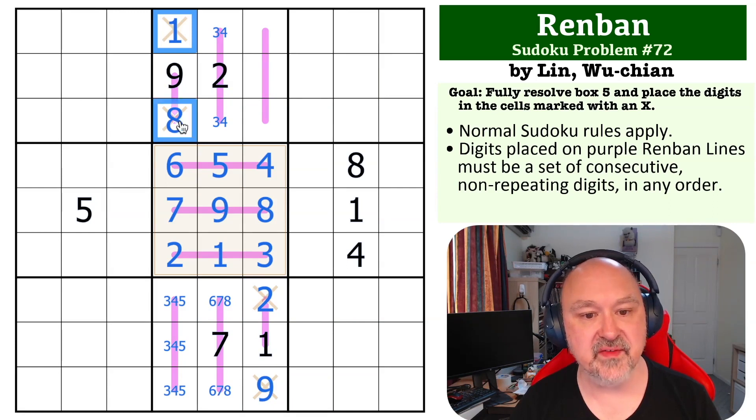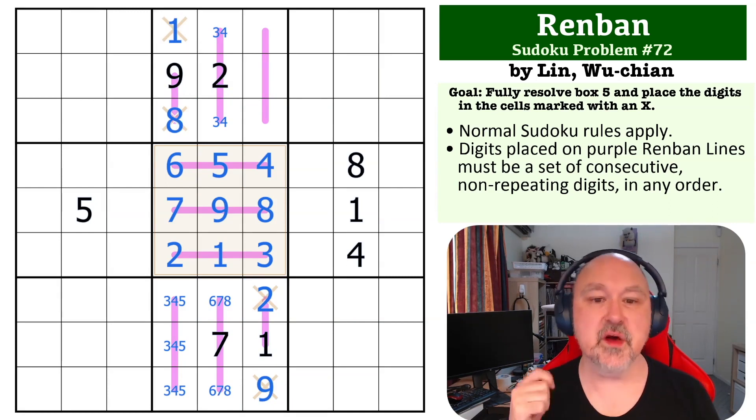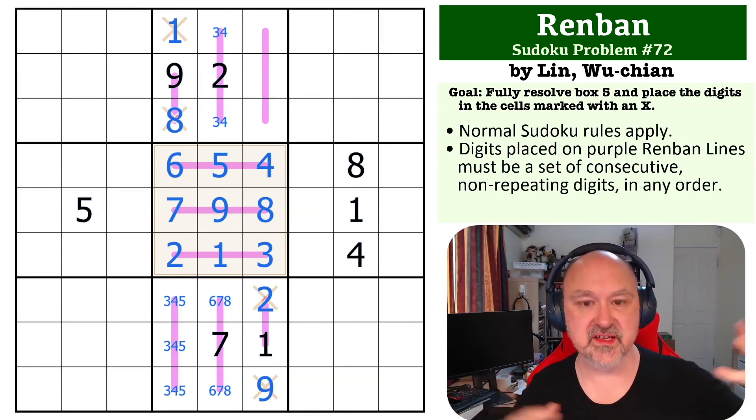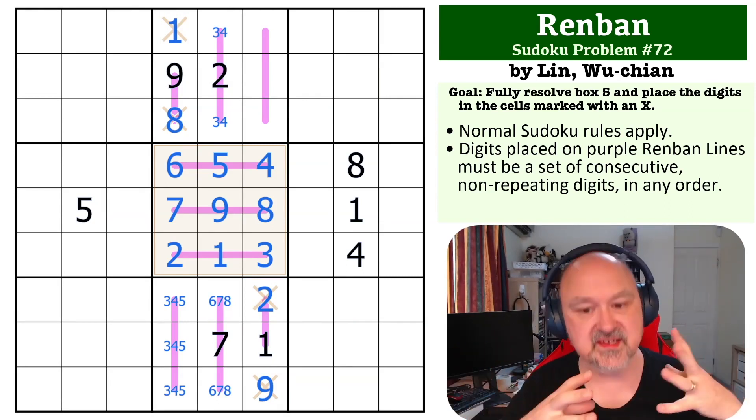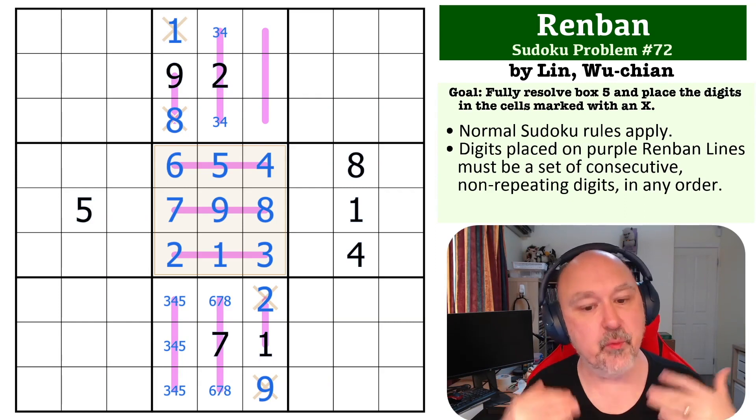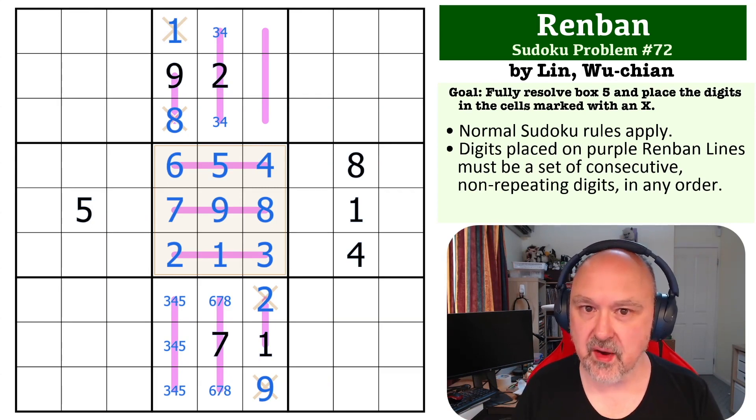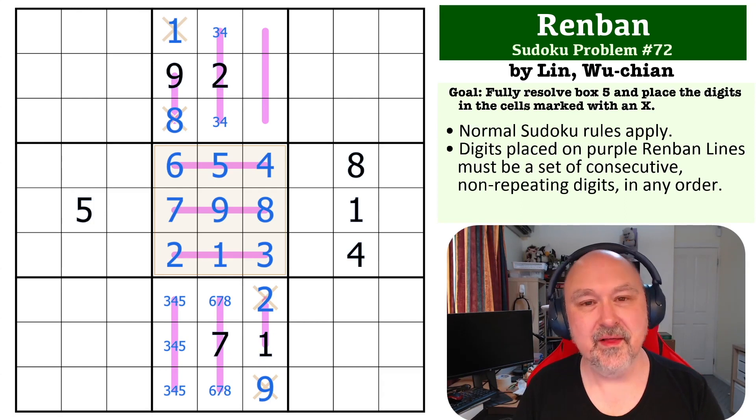This is a really nice Renban interaction—those three-cell long Renban lines bouncing off each other and placing all of that force. Once you figured out the 1-2-3, 4-5-6, and 7-8-9 in box 5, really liked this one. There was a little bit of contention as to whether this was a medium or a hard problem, and we came down on the side of medium. I hope you agree. Thank you everyone for watching.